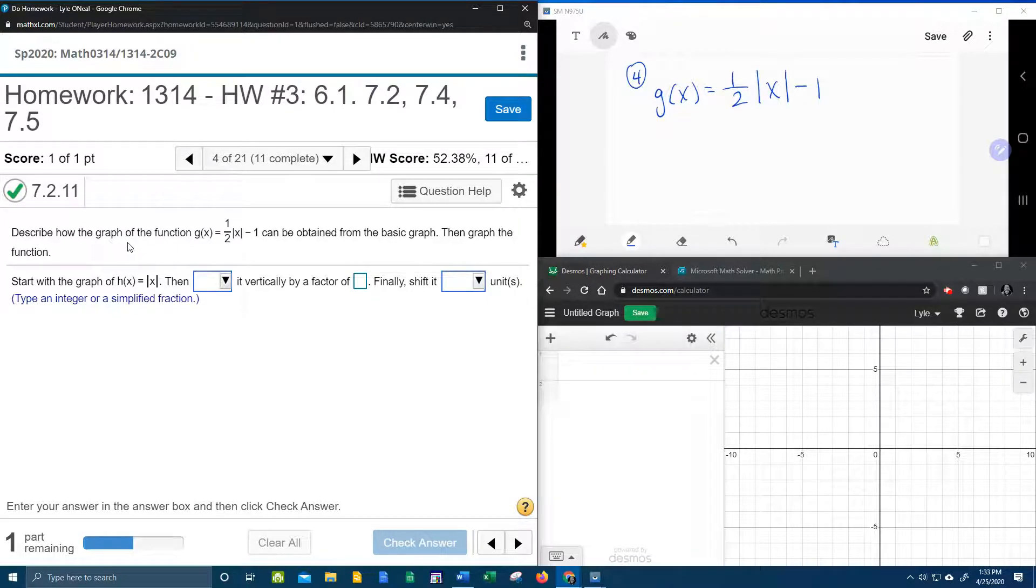They ask us to describe how the graph of the function g(x) = 1/2|x| - 1 can be obtained from the basic graph, that means from the parent function.